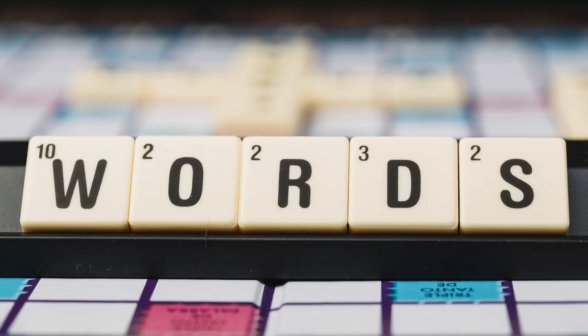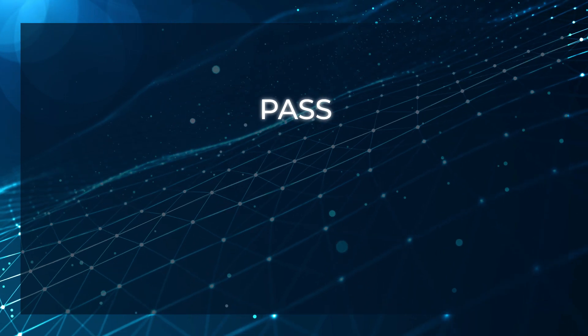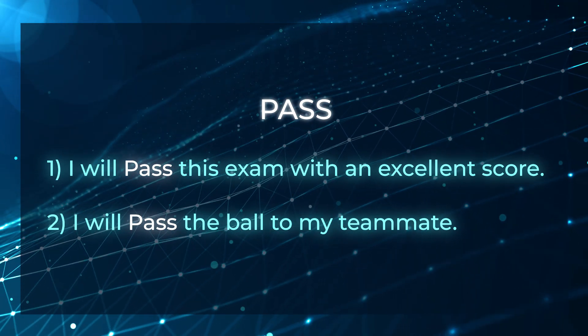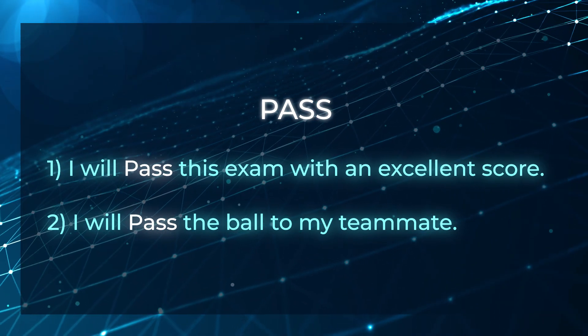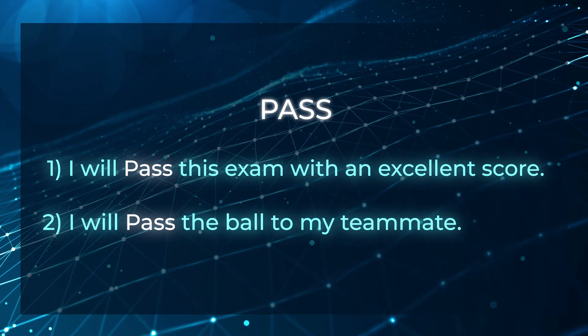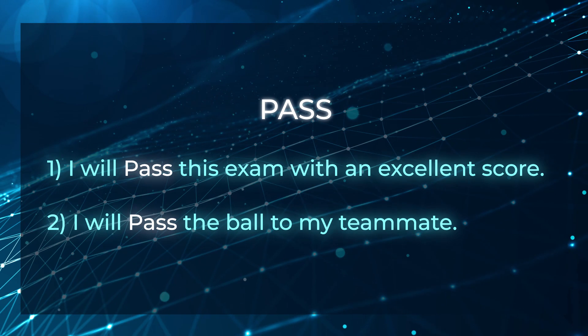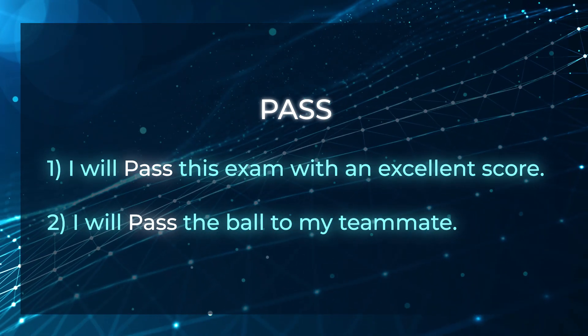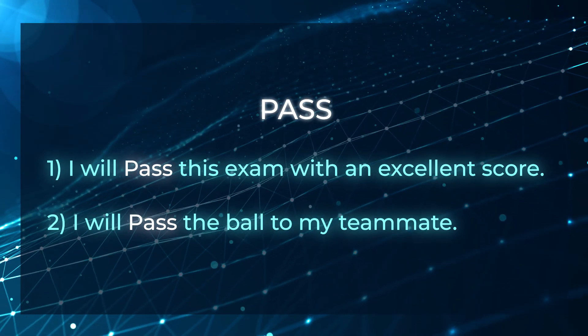Polymorphism is not only restricted to symbols such as plus — words also can be polymorphic, meaning words can have multiple meanings. Observe these two sentences in English. The first sentence is: "I will pass this exam with an excellent score." The second sentence is: "I will pass the ball to my teammate because there is an obstruction from the opponent." Both sentences have the same word, pass, but the meaning of pass in both sentences is completely different. Hence this word has multiple meanings — we say it is polymorphism.